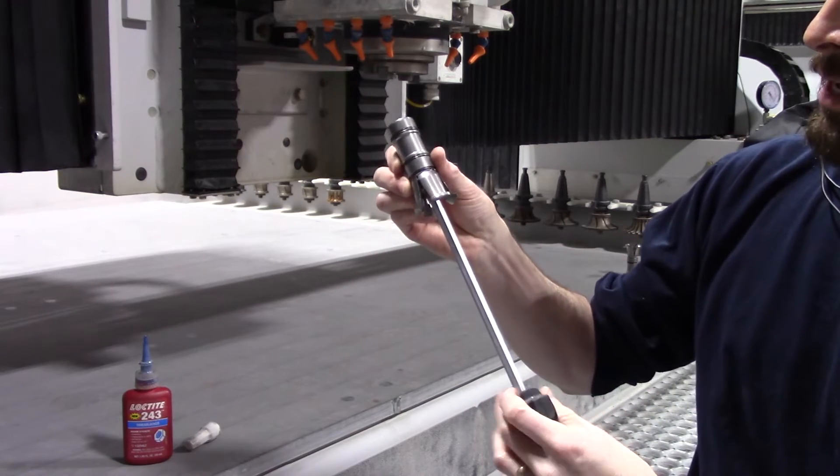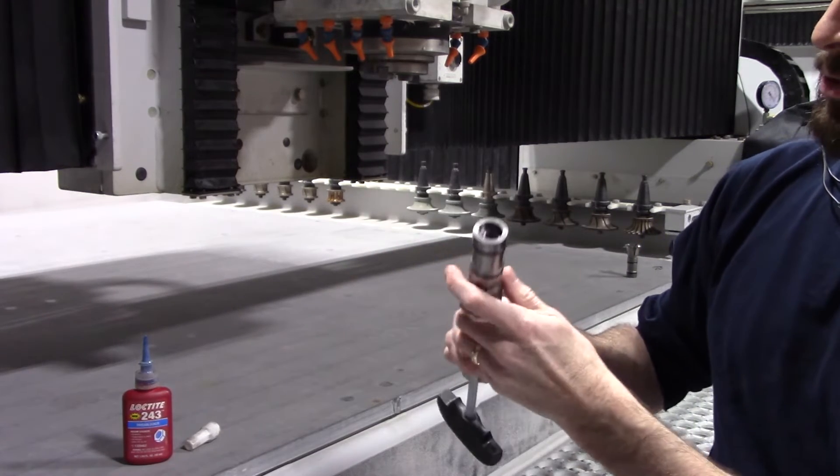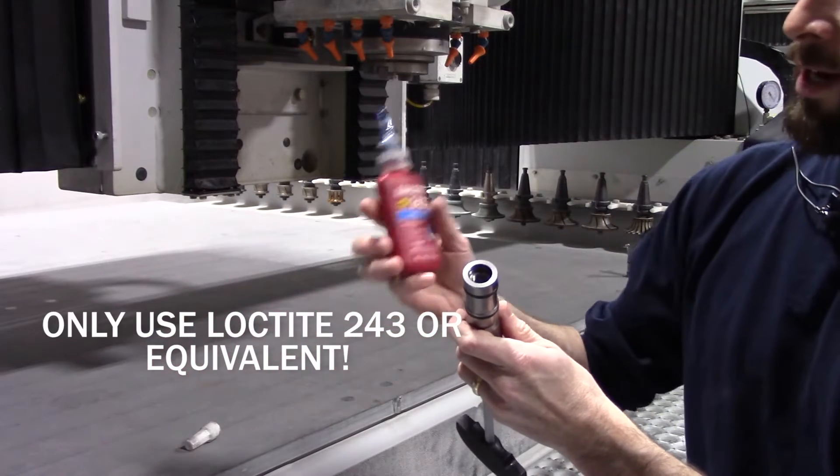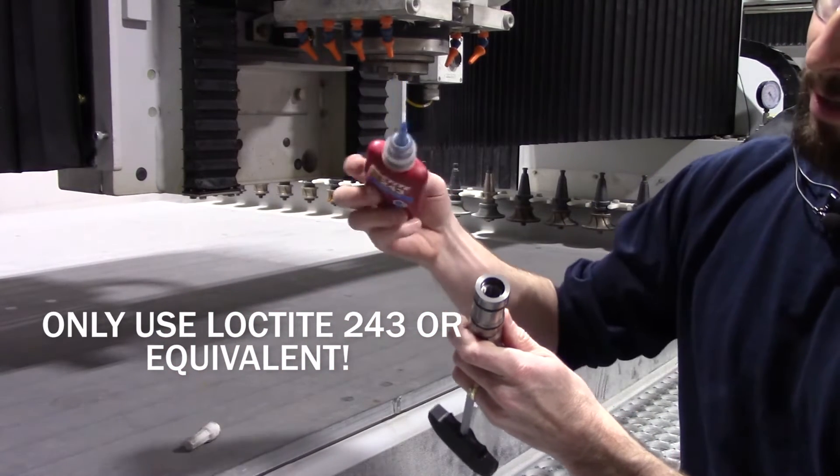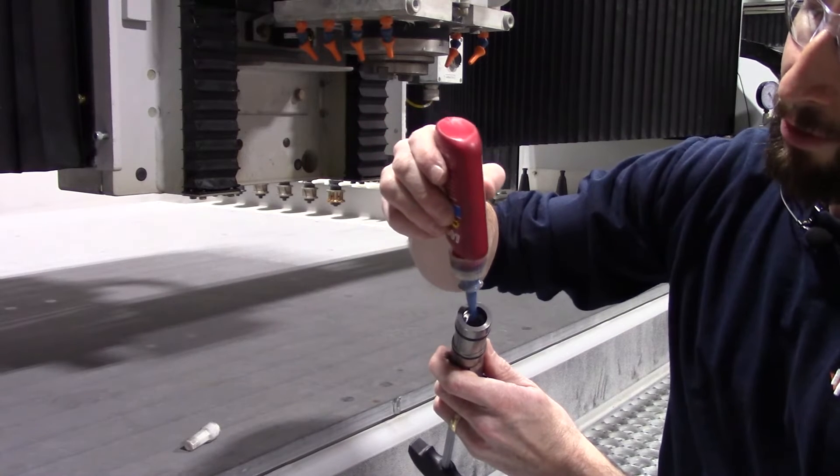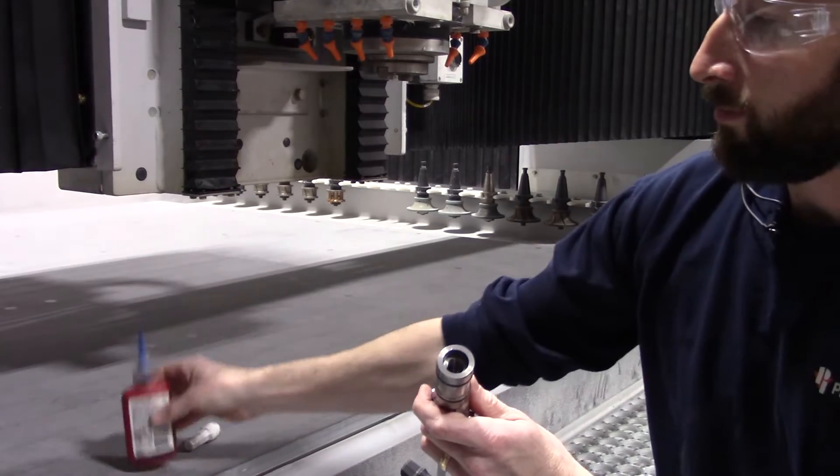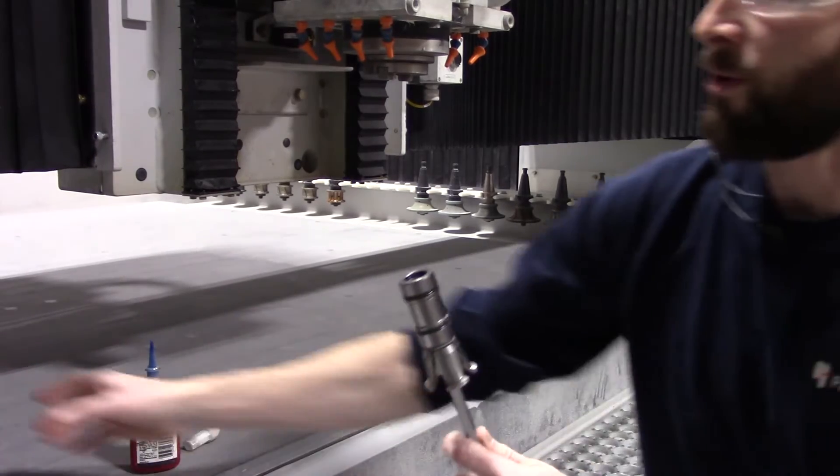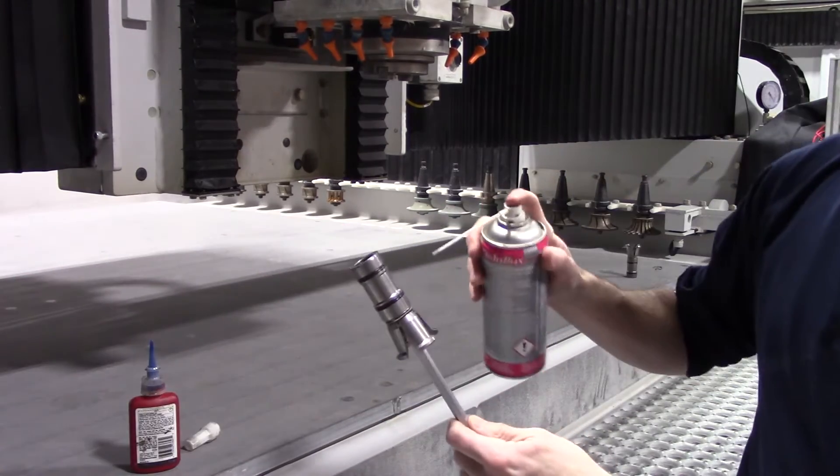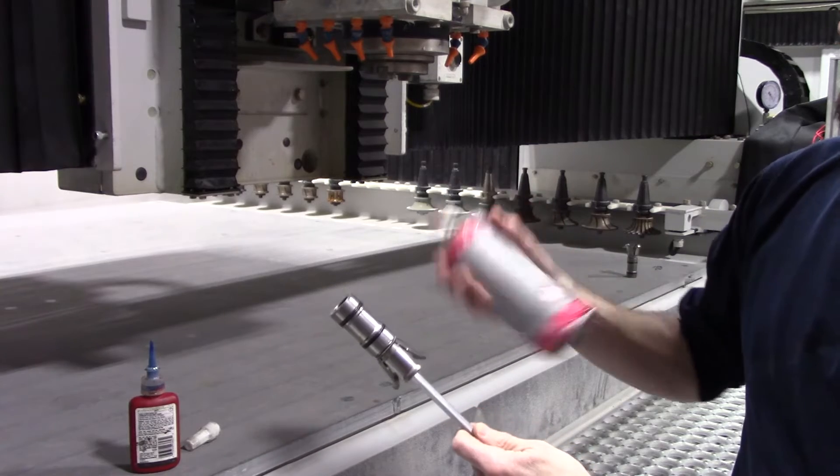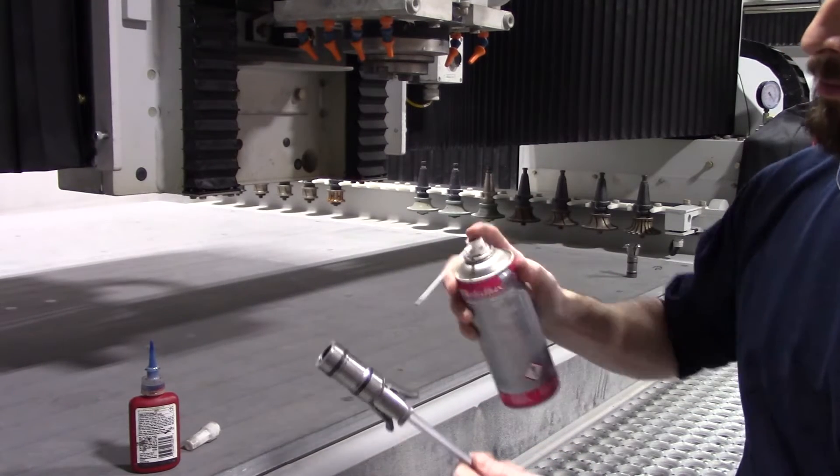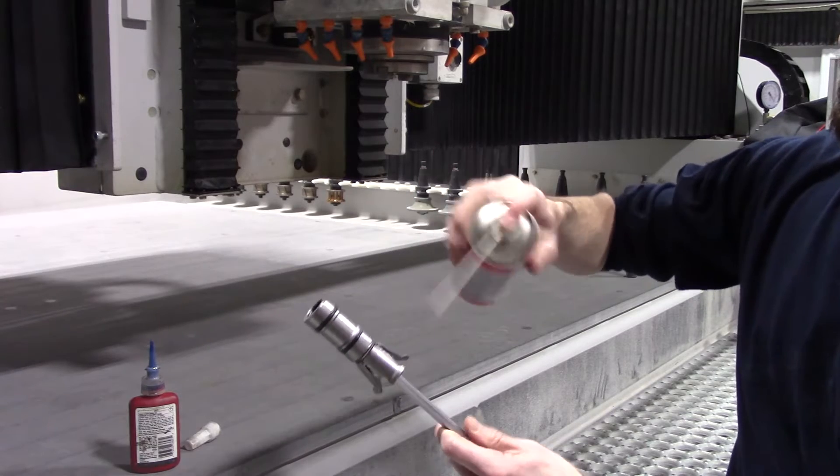So we'll insert that. The next step is we're going to add a drop of blue loctite 243 on the internal threads right here. So we'll just do one healthy drop. And then we'll coat up the exterior of it with some Metaflex. So we'll shake this up good and then just give this a good healthy coating.